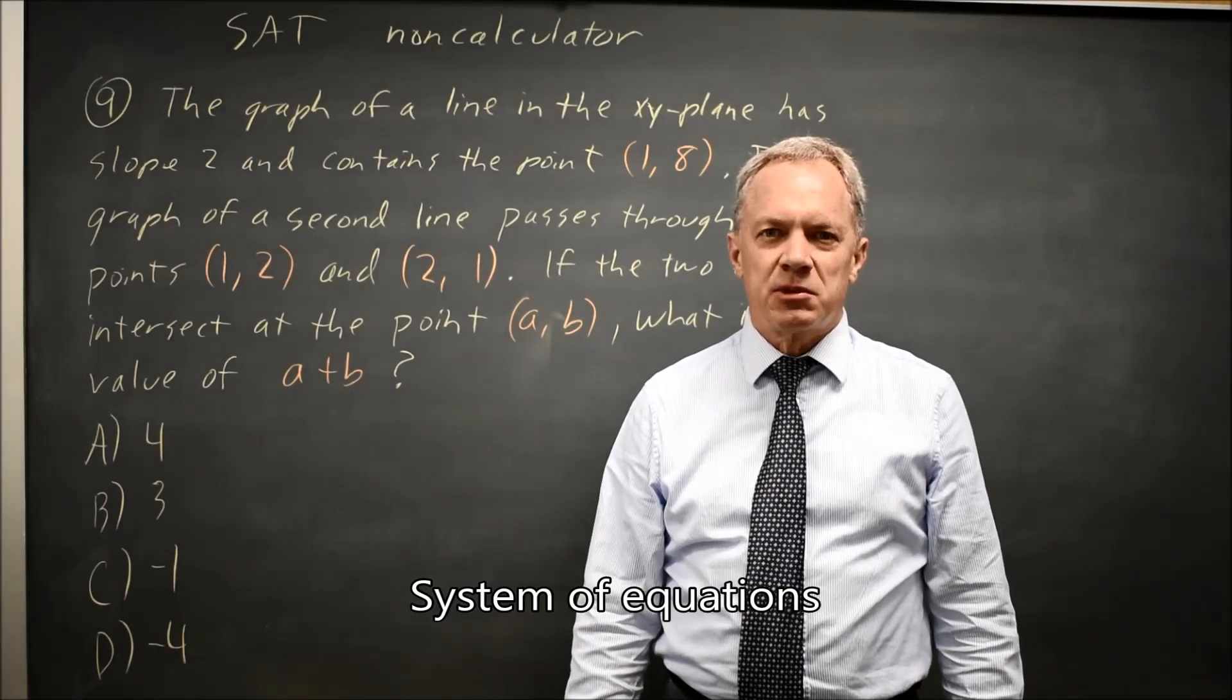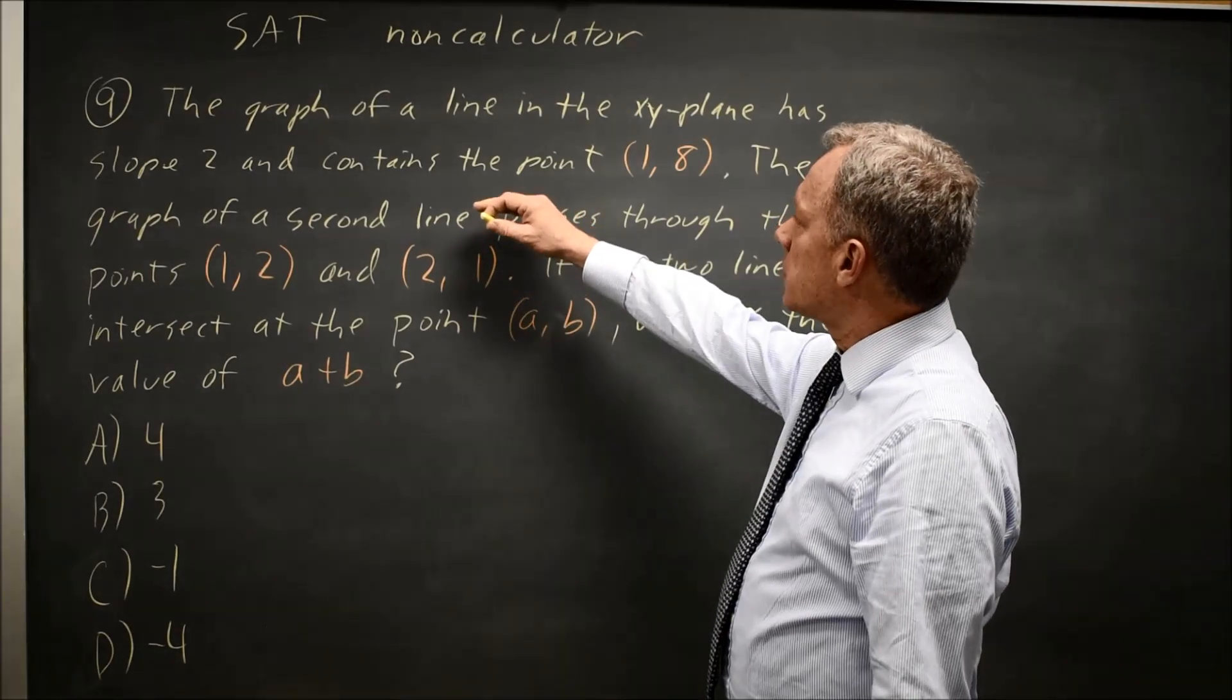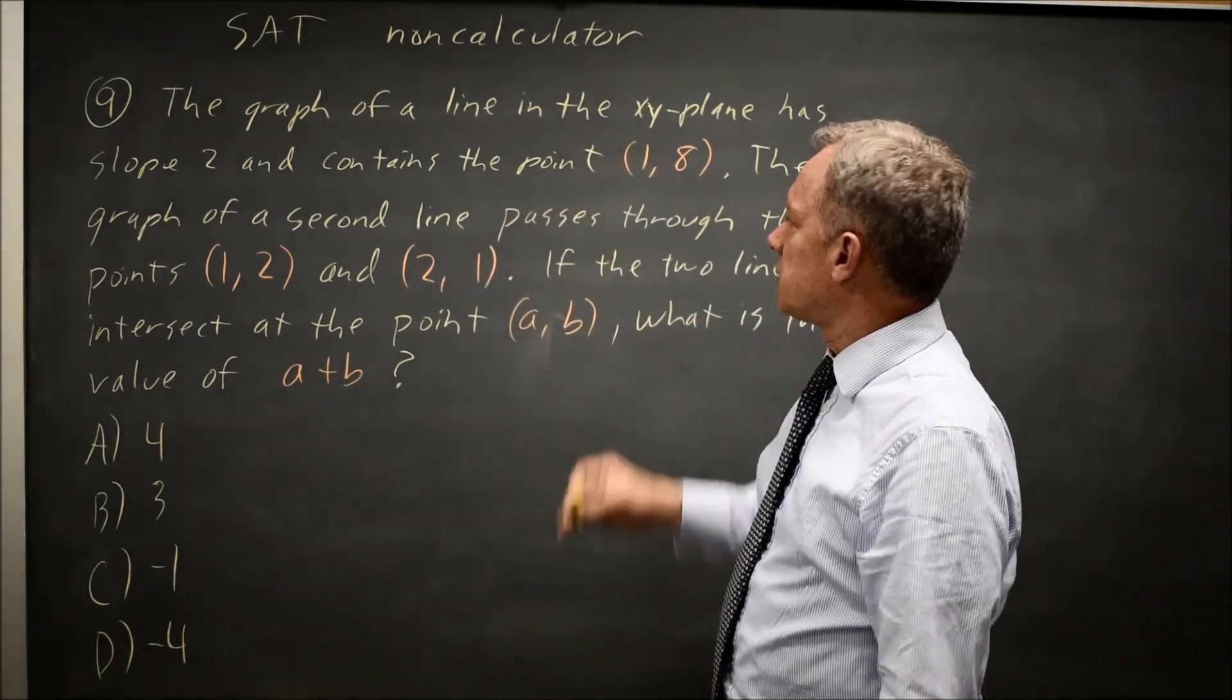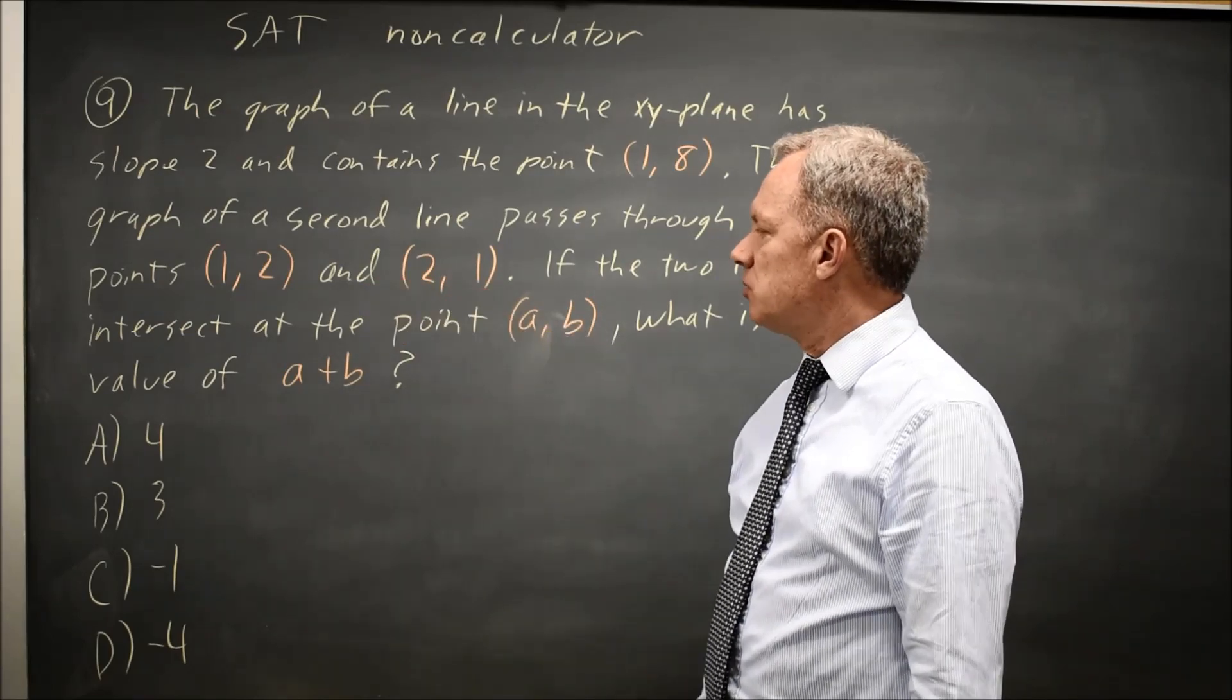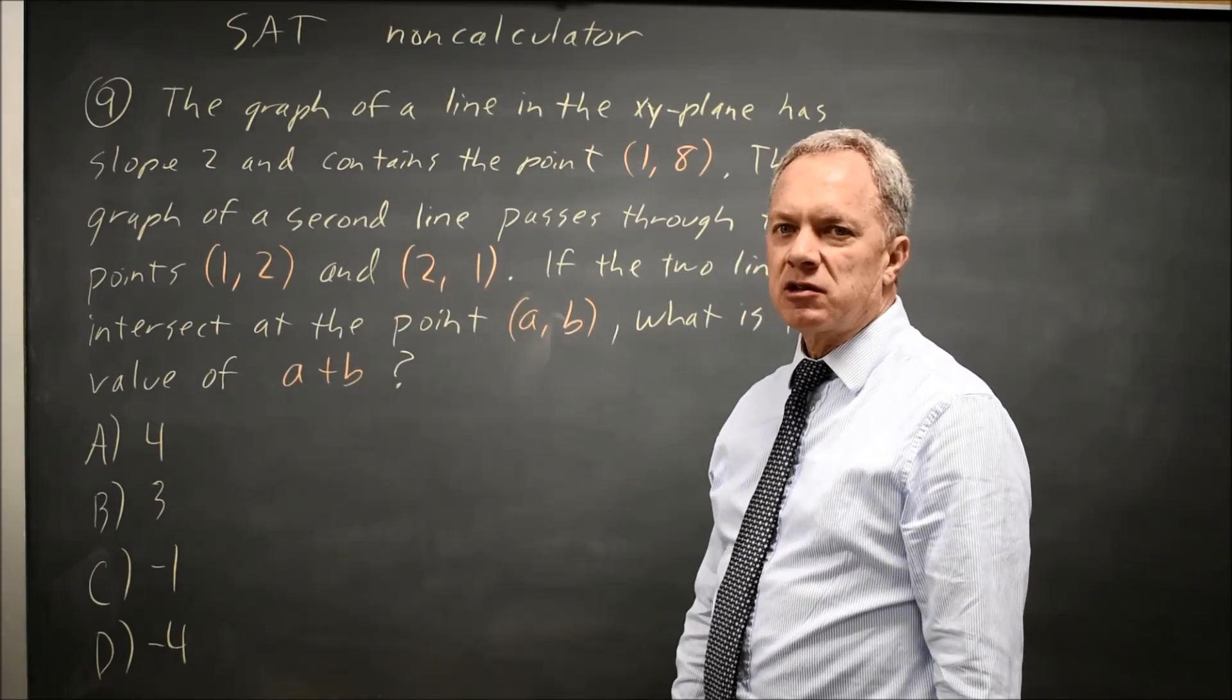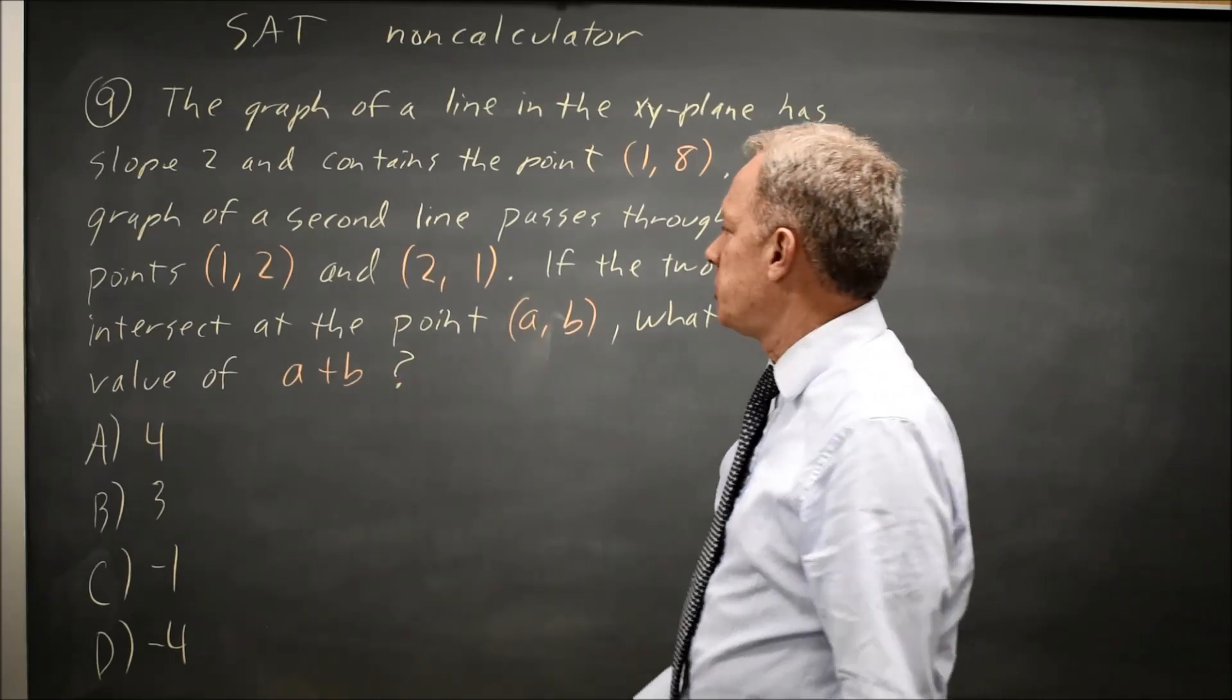This is non-calculator question number 9. College Board tells us that there are two lines in the plane. One has slope 2 and contains the point (1,8), and the other passes through (1,2) and (2,1). They want the coordinates of the point of intersection, or actually the sum of the coordinates, which turns out to be easier.